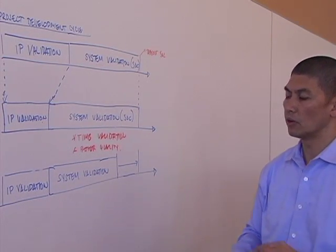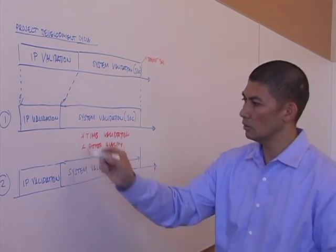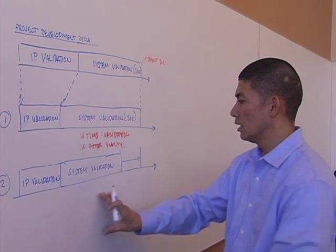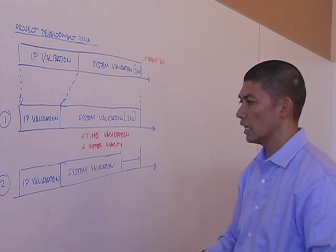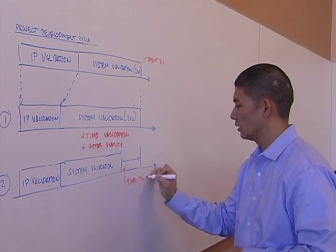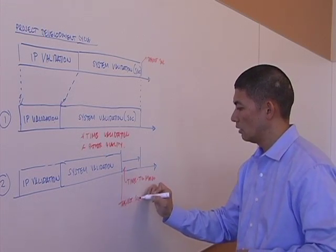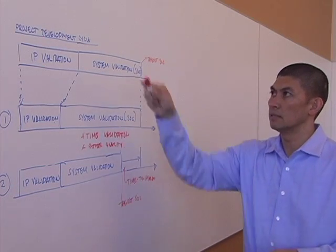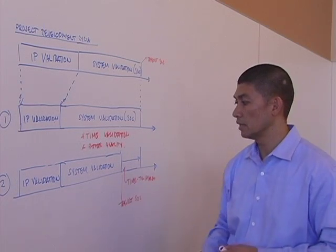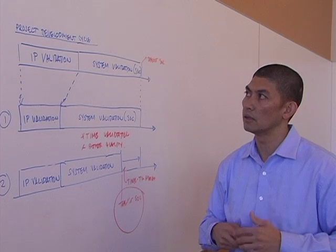So the second benefit of bringing up an IP in a project development cycle is that, if you're able to validate the IP much faster in previous projects and you've allocated the same amount of time to do system validation, the gain that these customers were then able to achieve is what we call an additional time to market. Which then allows them to really tape out their SOC in a much faster process than previous project cycles. So this is a big advantage in terms of quickly identifying what the challenges are, address those challenges, and be able to tape out their chip in a much faster way than previous projects.